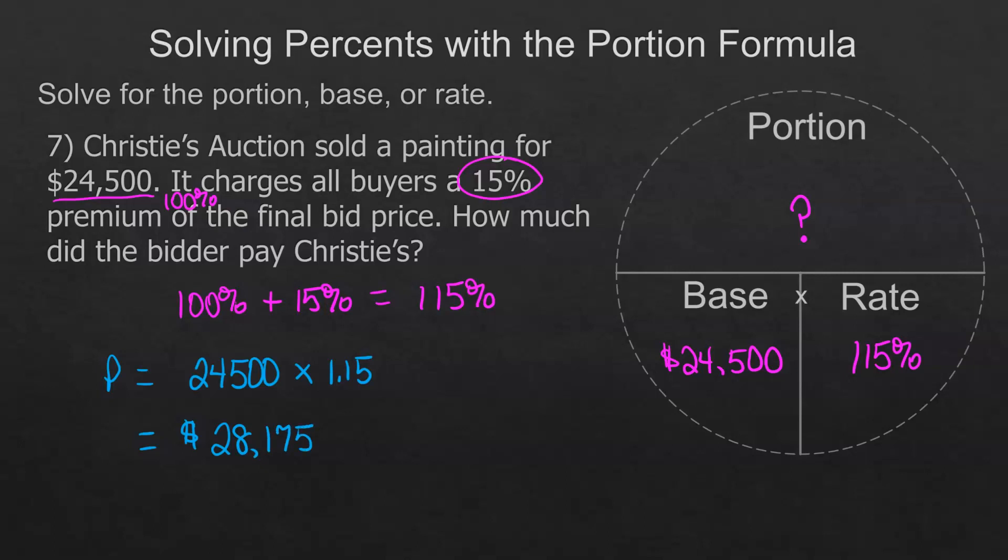To find the portion we take 24,500 times 1.15 and that gives us a total of 28,175. Now we can check this. If I took 24,500 times 15%, that would be 3,675. That would be the portion. But in this case, we found the portion to be over the 24,500. And if we added it to 24,500, we would get the same thing: 28,175.